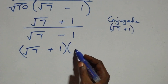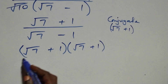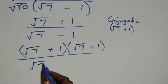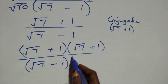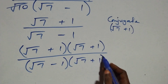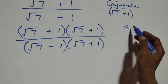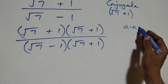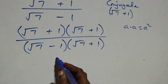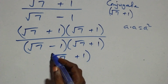The numerator becomes root seven plus one multiplied by root seven plus one. Since we have a times a, we can express this as a squared, so the numerator is root seven plus one, all squared.